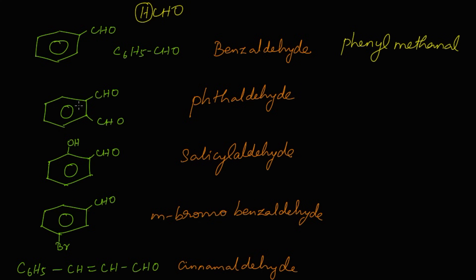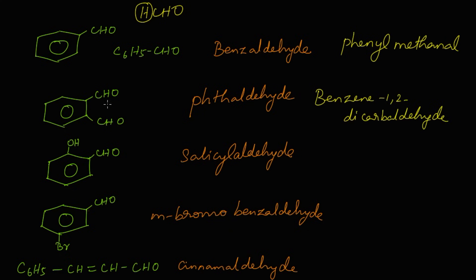For the second aromatic compound, two aldehyde groups are attached to the benzene ring, so it is named benzene-1,2-dicarbaldehyde — using 'dicarbaldehyde' because two aldehyde groups are present.